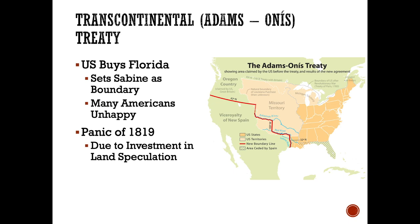The treaty set a boundary line that runs from the Sabine River up to the Red River, up to the Arkansas River, and then up to the 42nd parallel. This treaty — the Transcontinental or Adams-Onís Treaty, as it's sometimes called — made some Americans unhappy because they believed the United States shouldn't have stopped at the Sabine, and that Americans should have gotten more territory in what is today Texas.